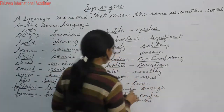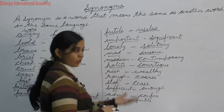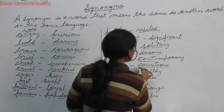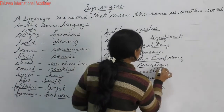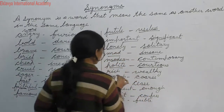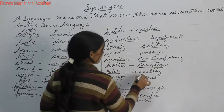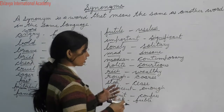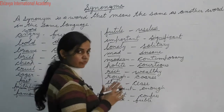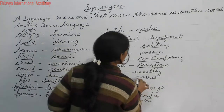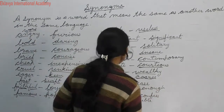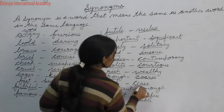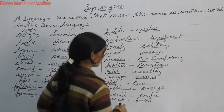Polite and courteous are synonyms — you can say he is a very courteous person. Rich and wealthy are synonyms. Rough means jo khurdra hota hai, jis ki surface rough hoti — coarse is its synonym. Stop means rokne ke liye hota hai, and seize also means rokna.